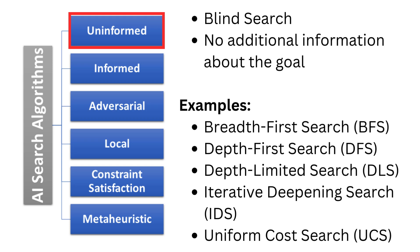Let's start with uninformed search algorithms. Uninformed search algorithms don't have any additional knowledge about the problem — they blindly explore the search space. Examples include breadth-first search, depth-first search, depth-limit search, iterative deepening search, and uniform cost search.